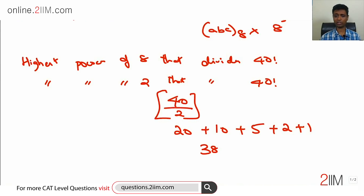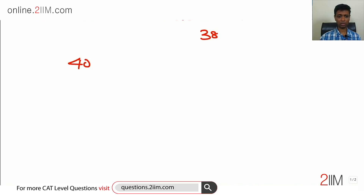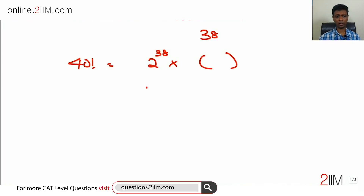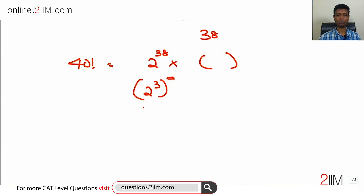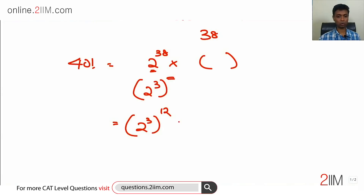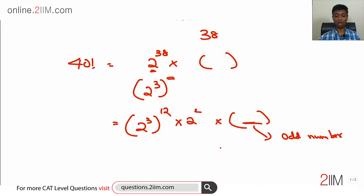Adding those up: 20 + 10 + 5 + 2 + 1 = 38. So 40 factorial is a multiple of 2^38 but not of 2^39. Now we want to find the highest power of 8 = 2³ that fits inside 2^38. Since 2³ raised to the 12th power equals 2^36, and 2³ raised to the 13th would be 2^39 which exceeds our 38, the highest power is 8^12. We are left with 2^36 × 2² = 2^38, so there is a leftover 2² factor.